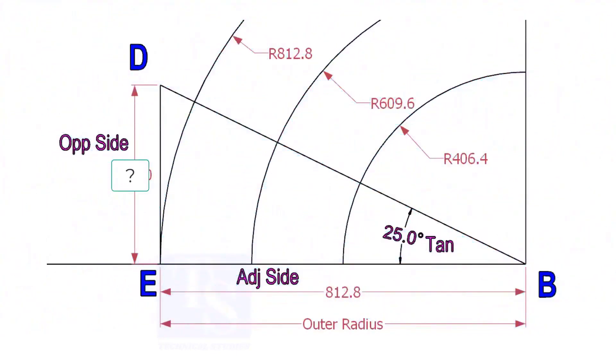Mark a line 25-degree rotated from the baseline AB. To draw the line DB, we need to know the length of the line ED.